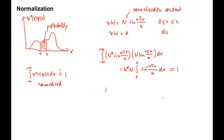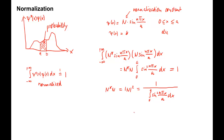Next, we get N star N, which is also equal to the norm or magnitude of N squared, equals 1 over the integral. The normalization constant N can only be determined if the integral gives a result that's neither 0 nor infinity. Evaluating the integral, we get the norm of N squared equals 2 over a.